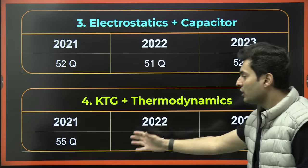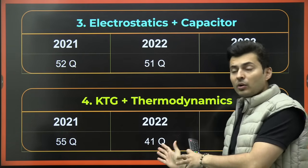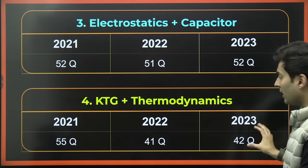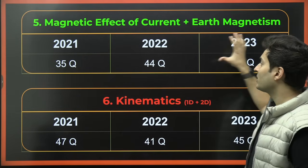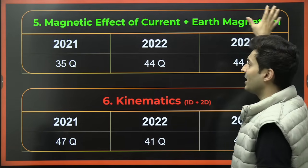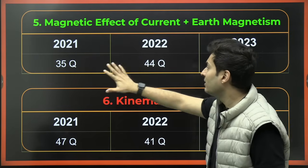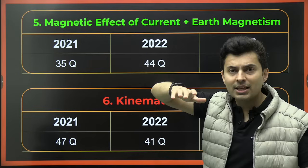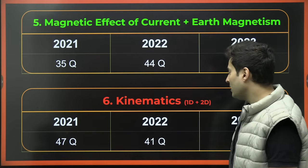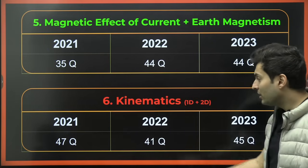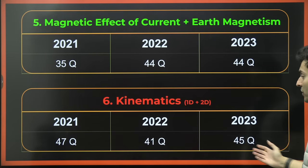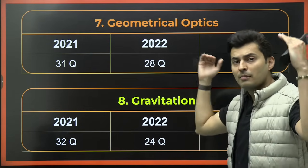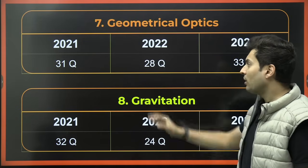KTG and thermodynamics — excluding thermal expansion, calorimetry, and heat transfer — is again a heavyweight unit on its own. Magnetic effects of current: note that Earth's magnetism has been removed from the syllabus. This unit still had 35, 44, and 44 questions over three years — some students may choose to skip it and do something else. Kinematics — 1D, 2D, and vectors — is also heavyweight, with 47, 41, and 45 questions in the last three years.